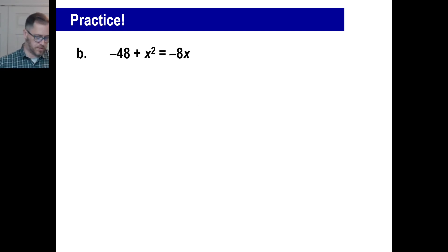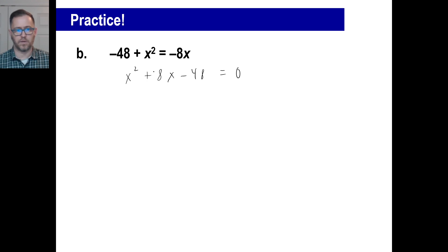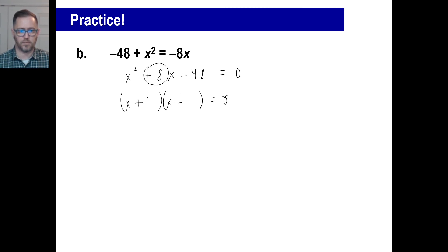Give B a whirl. Let's rearrange this thing so it looks like a decent equation. x squared stays there, negative 8x moves over and becomes positive 8x, negative 48 stays there, and we get zero on the right side. Two binomials with x and x — negative product, so positive and negative. It adds to be 8, so factors are positive 12 and negative 4. Two answers are negative 12 and positive 4.